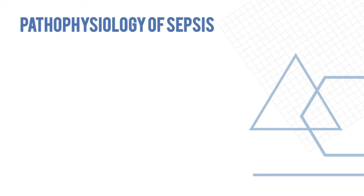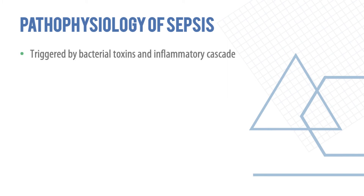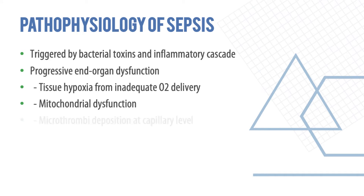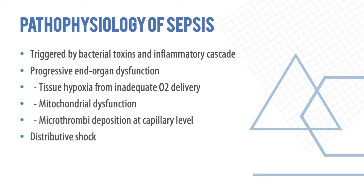Sepsis is triggered by bacterial toxins and an inflammatory cascade, causing progressive end-organ dysfunction. Tissue hypoxia occurs because of inadequate oxygen delivery. There is also mitochondrial dysfunction, thrombi deposited at the capillary level, and distributive shock.